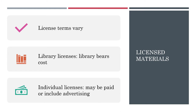Another option is to use licensed materials, where an agreement with permission for certain uses already exists. While you may want to ask about individual licenses, materials available online through the library typically include licenses that would cover classroom use by students, faculty, and staff, but not sharing outside the authorized users. You can link to these materials or upload them directly to Canvas. The library licenses journals, ebooks, and streaming audio and video that can be included in your Canvas site.